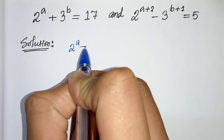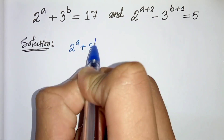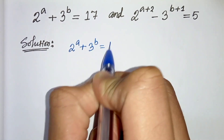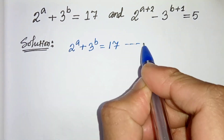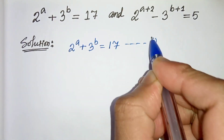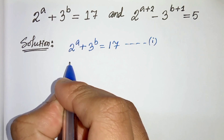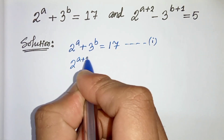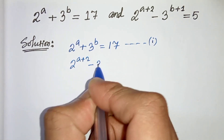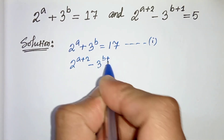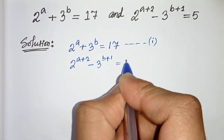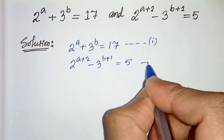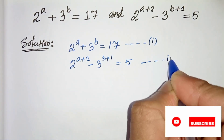2 to the power a plus 3 to the power b equals to 17. This is equation 1. And 2 to the power a plus 2 minus 3 to the power b plus 1 equals to 5. This is equation 2.